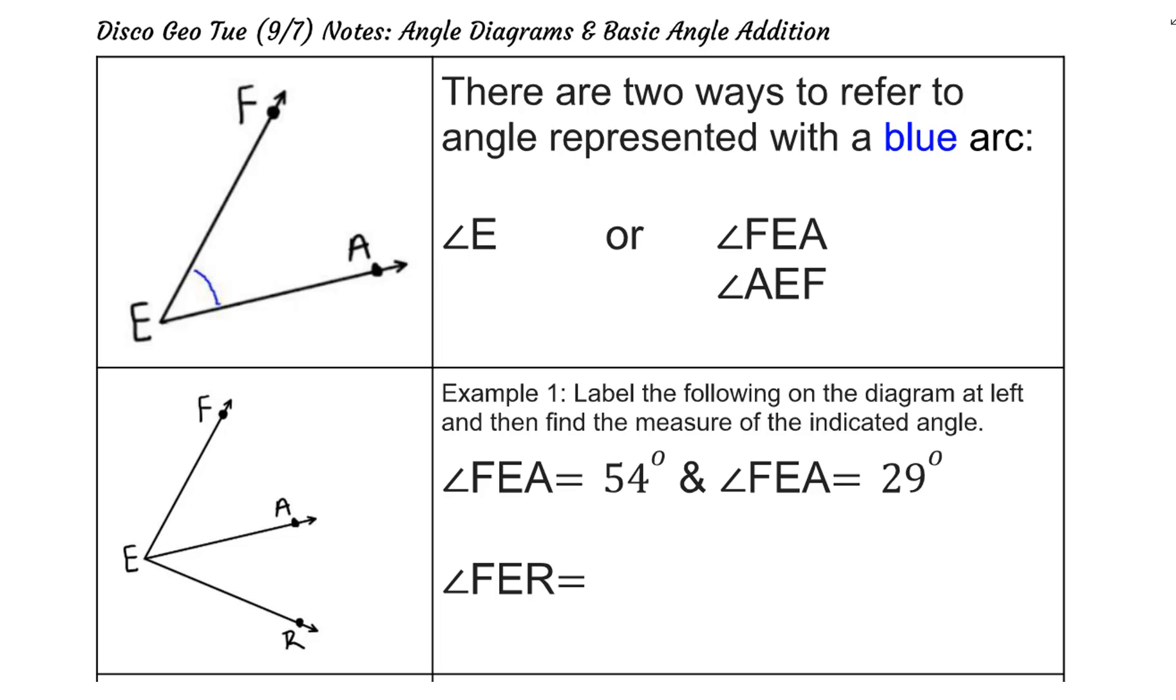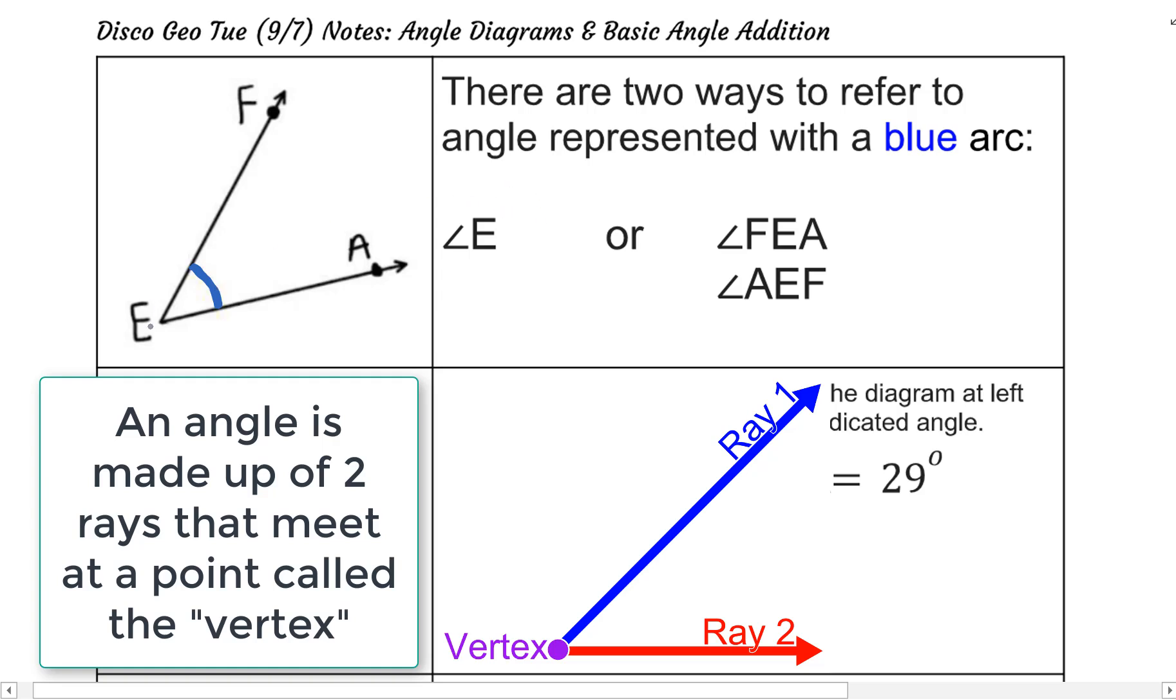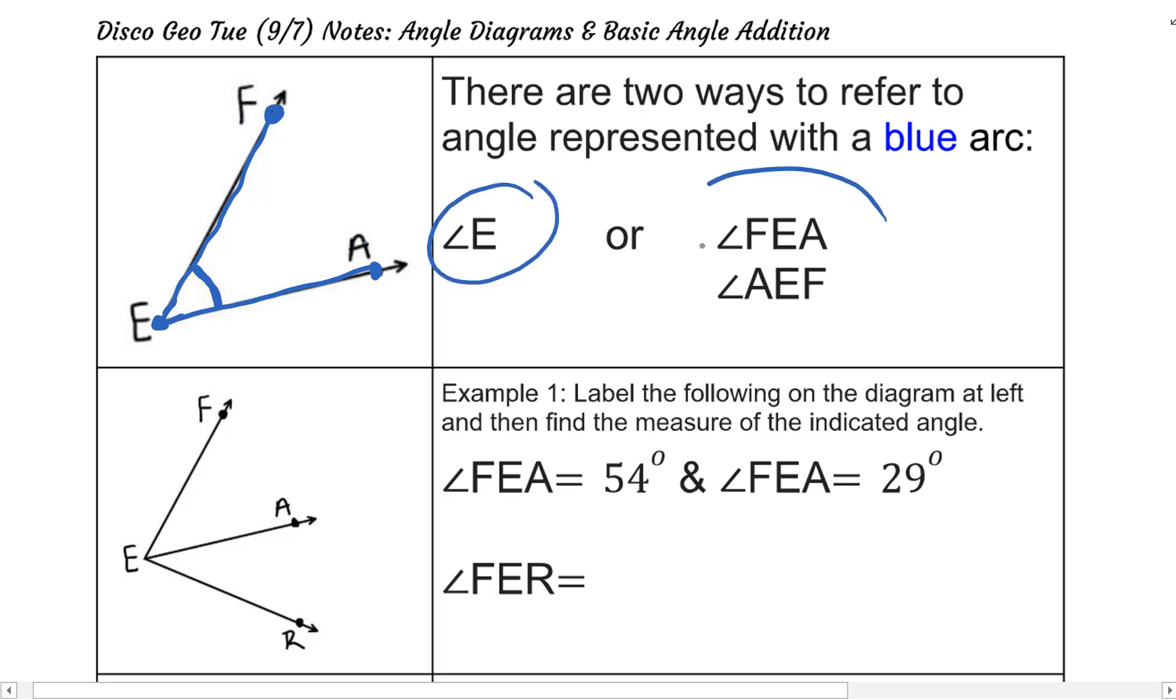There are two ways to refer to the angle we have at left, the angle here with the blue arc. We can either use the point of the angle's vertex, angle E, or we can use three points with that vertex point in the middle, so F, E, A, or the opposite direction, A, E, F. These are the three different names we could give for this particular angle.